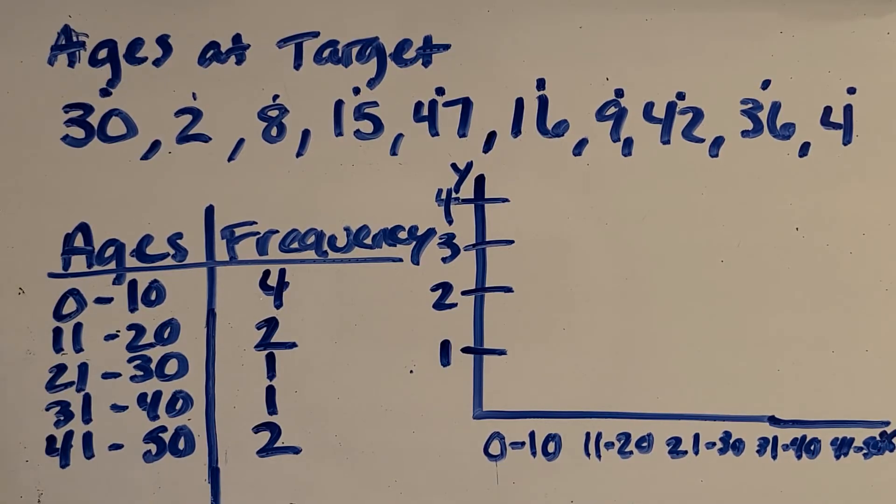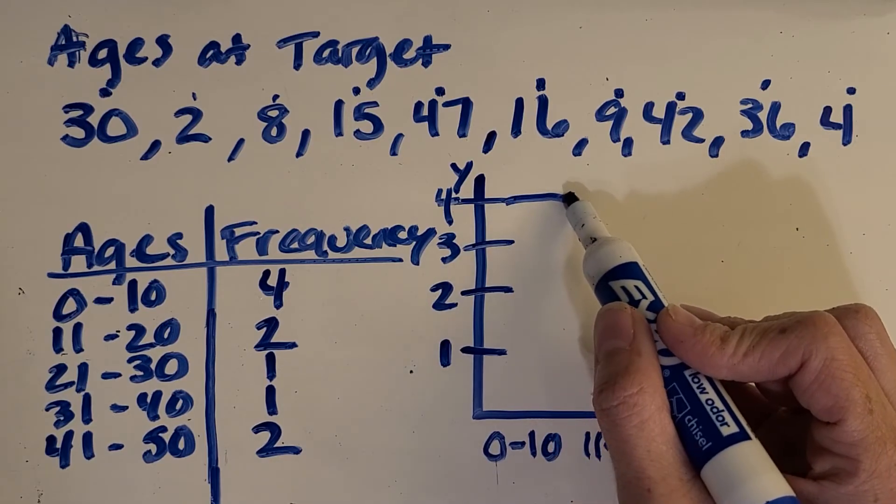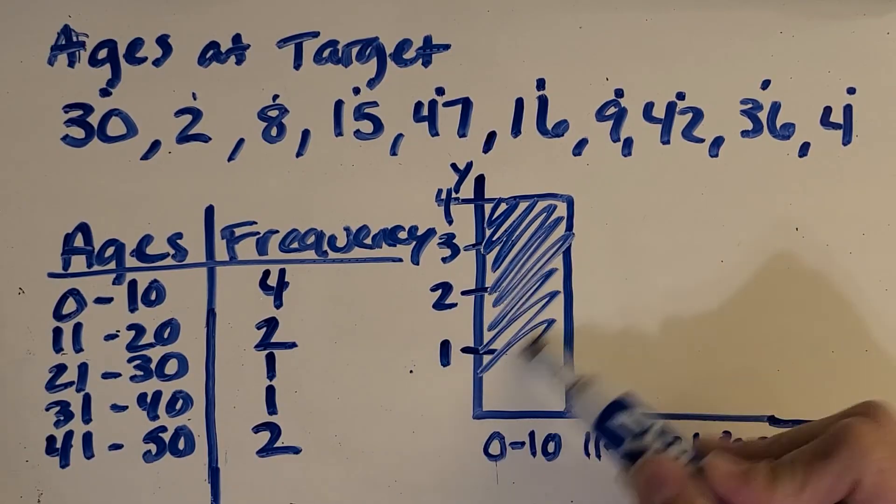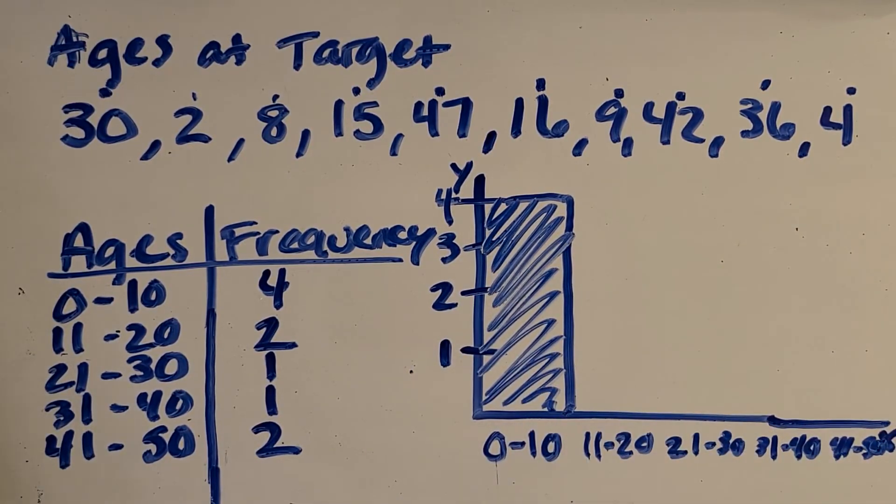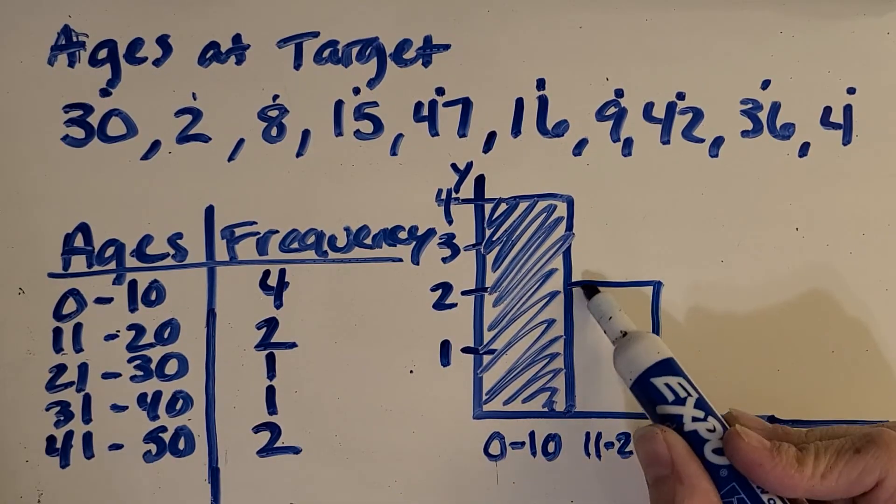So now it's just a matter of making the bars that go with these ranges on the x-axis. So what should I do with my 0 to 10? Yep, you got it. Make the bar go to 4. How about the 11 to 20? You got it. 2.